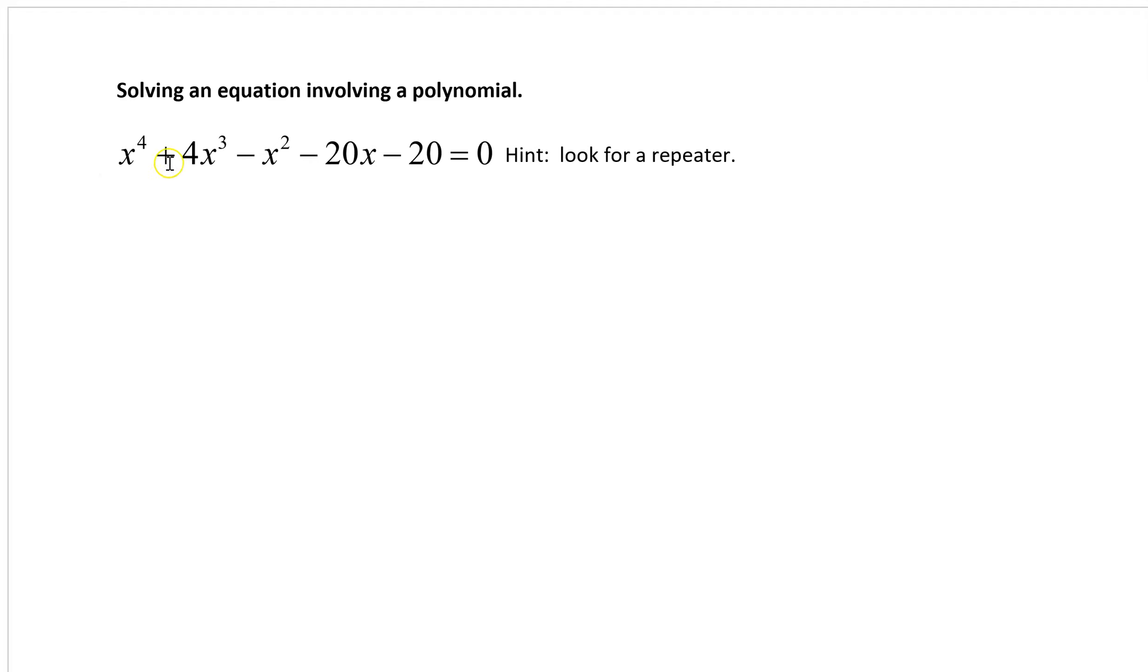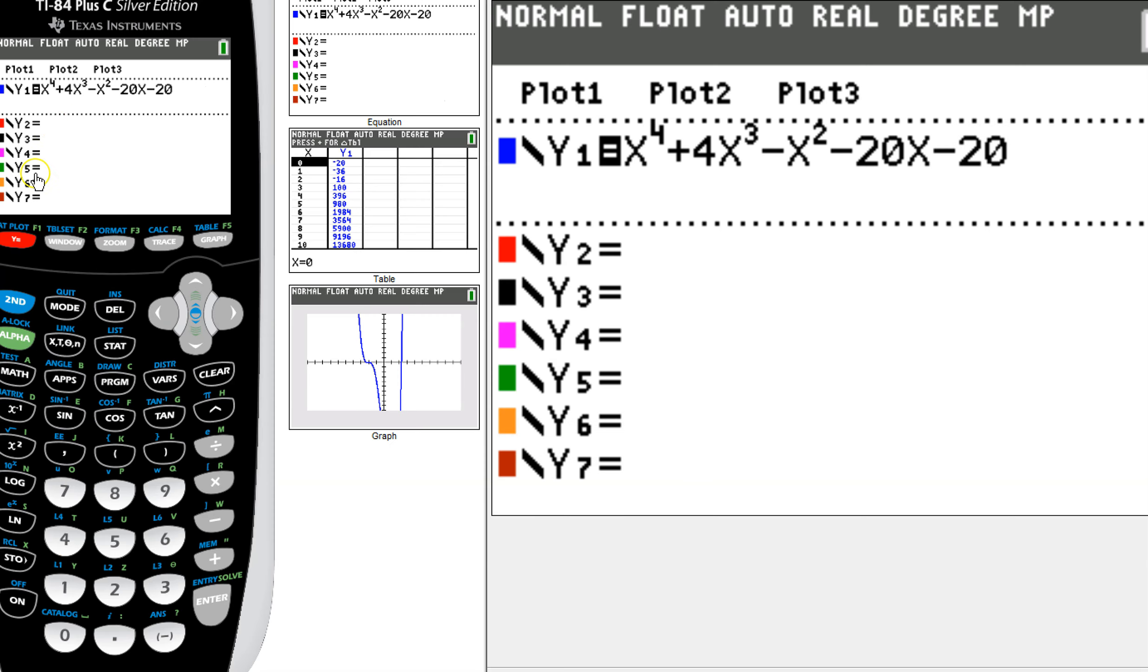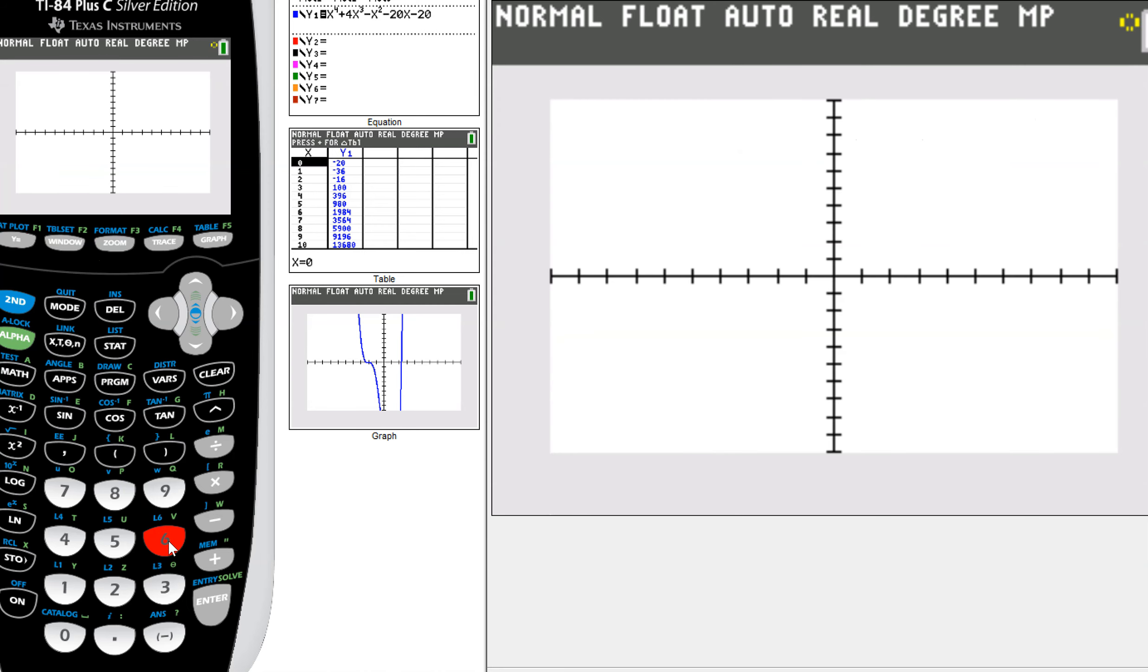In this video, we are solving equations with polynomials. What you're going to do first is set it equal to zero, and then do exactly the same steps we did to find the zeros in the previous video. Our goal here is to take this degree four and turn it down to a degree two, to some sort of x squared that we have, and then we're going to use that to find the last two.